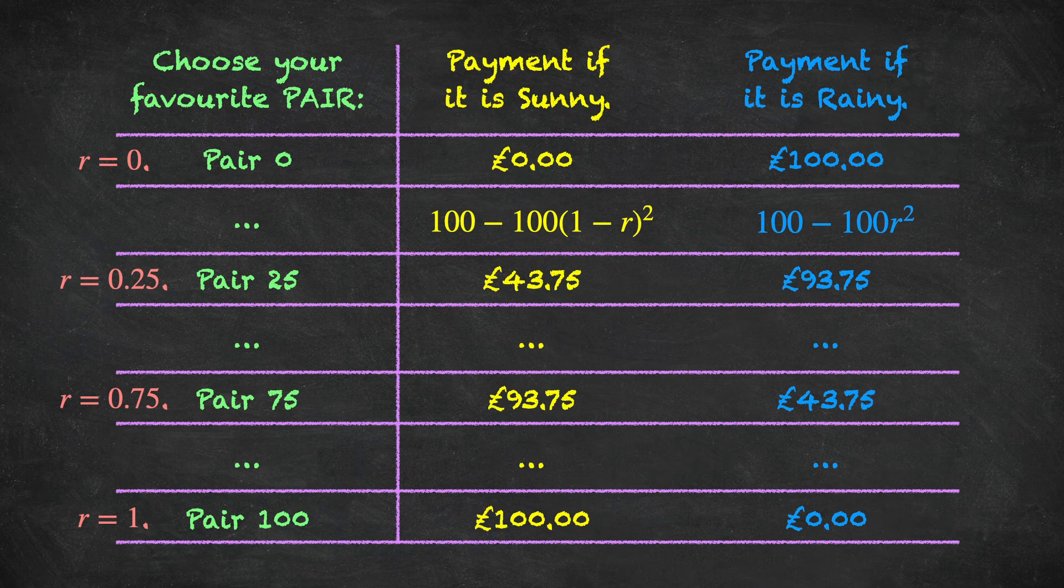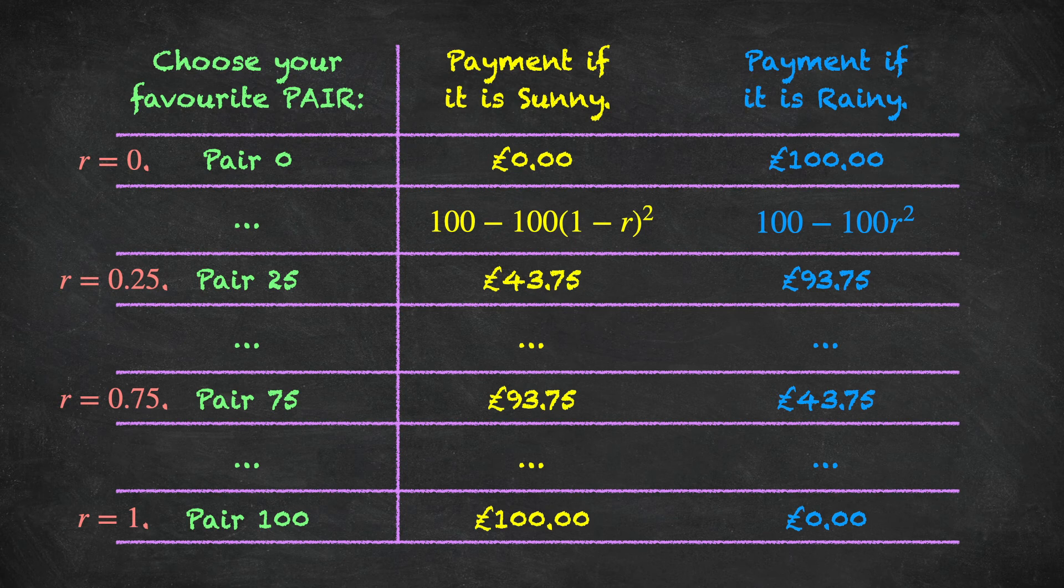So we get 100 minus 100 times (1 minus R) squared if it's sunny. And if it's rainy, 100 minus 100 R squared. So this is a way of presenting that proper scoring rule idea. And as individuals look through the list of pairs of possible payments, and you can make the list as fine grained as you like, when they find their favourite pair of payments, they indirectly reveal what their subjective probability for the sunny event actually is.